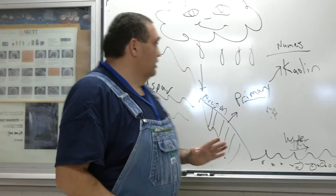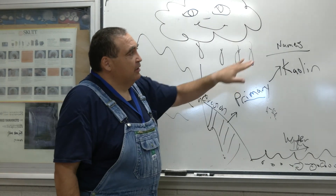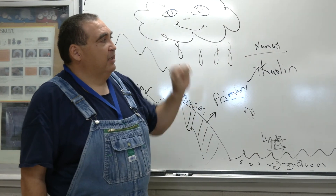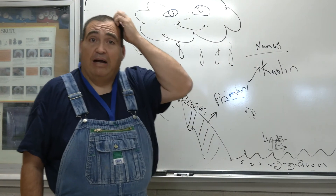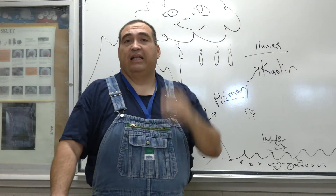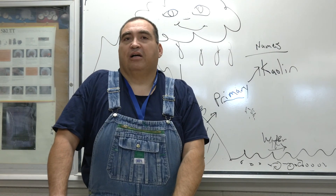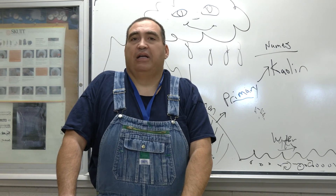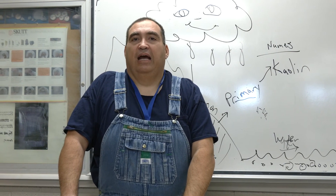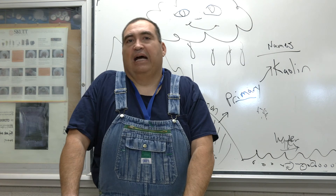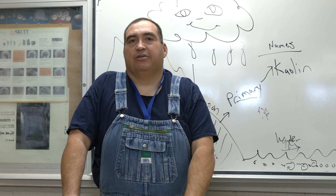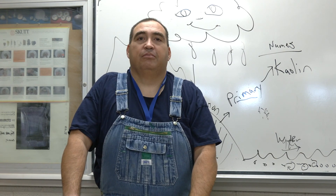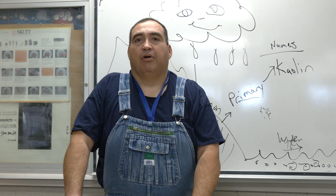Just as a recap: you have primary and secondary clay — your kaolin and your ball clay — and then you have fire clay, which has particles of all kinds of different shapes and sizes. They're all found in nature. What we do is collect it, gather it, screen it, and get it ready for use in the classroom or anywhere around the world.